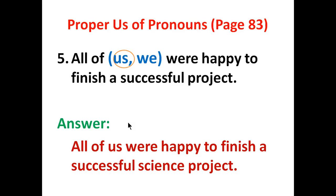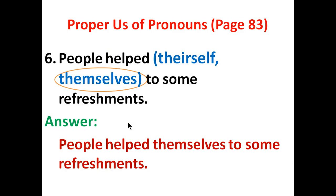Number five: all of us who are happy to finish our successful project. Number six: people helped themselves to some refreshments. There is no 'their self' as a reflexive pronoun in English grammar — that is wrong. The correct option is 'themselves.' Hopefully you will have written all the sentences as per the instruction.